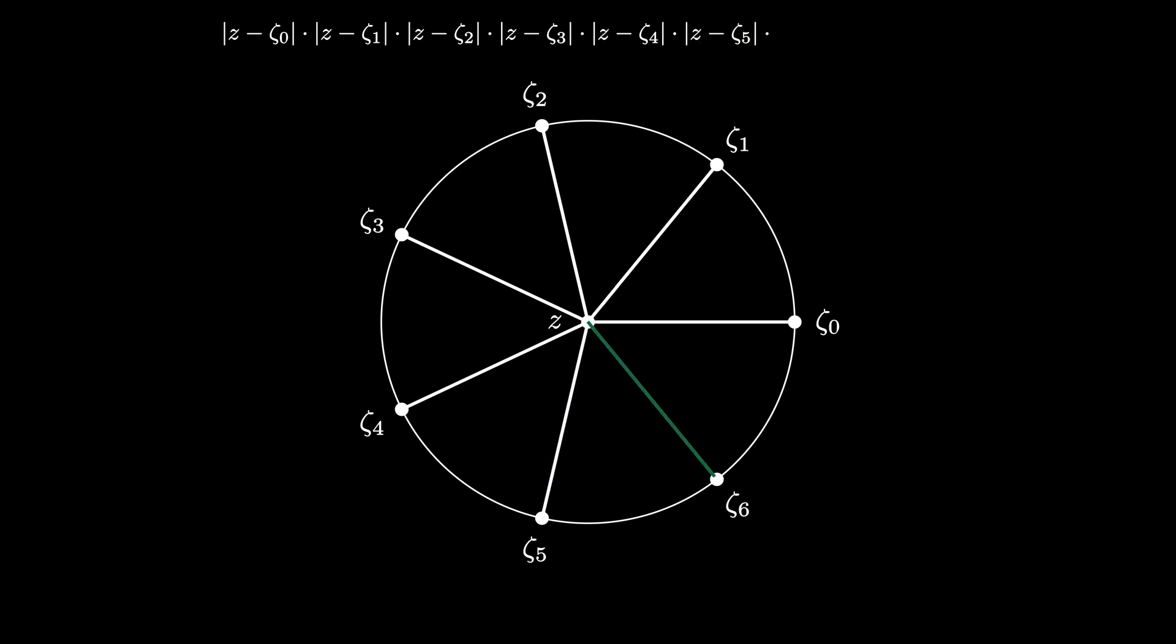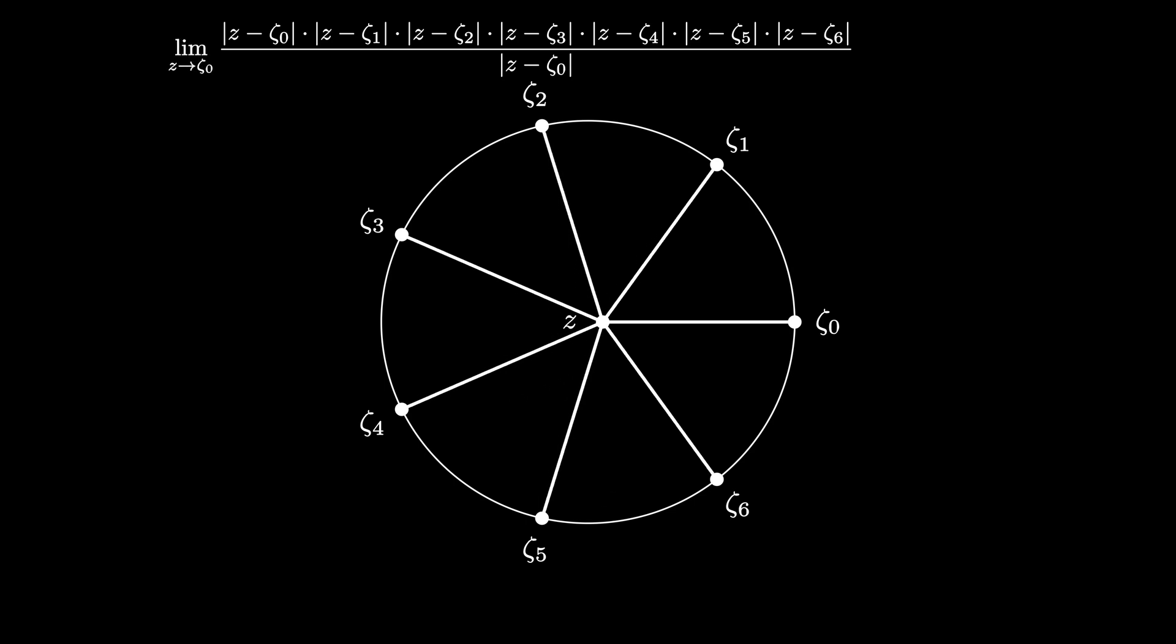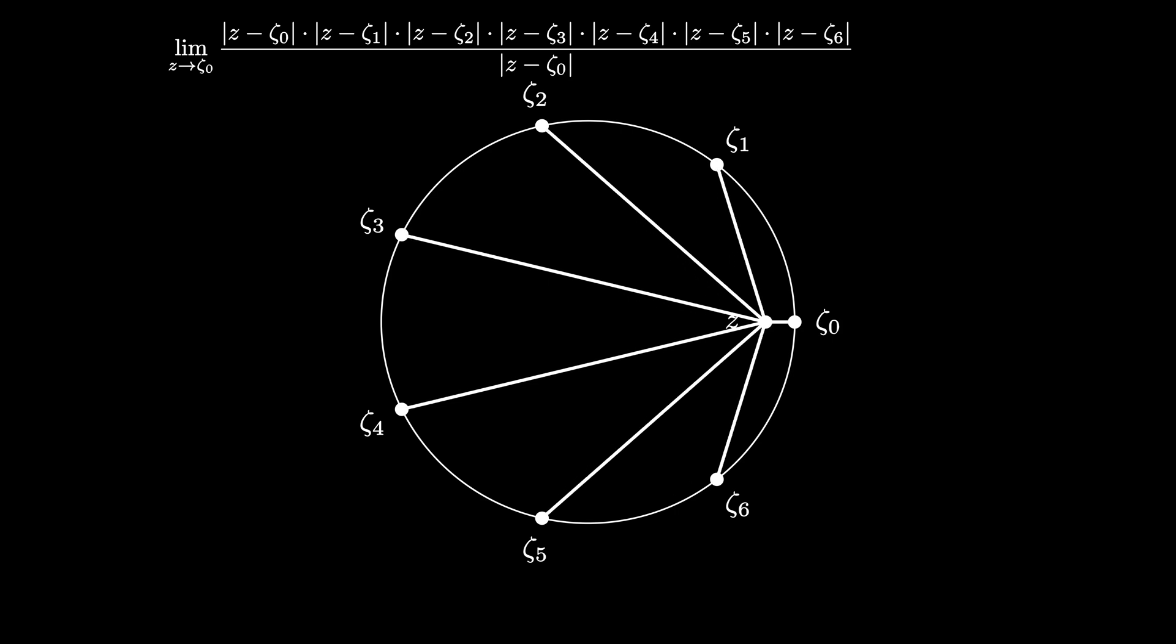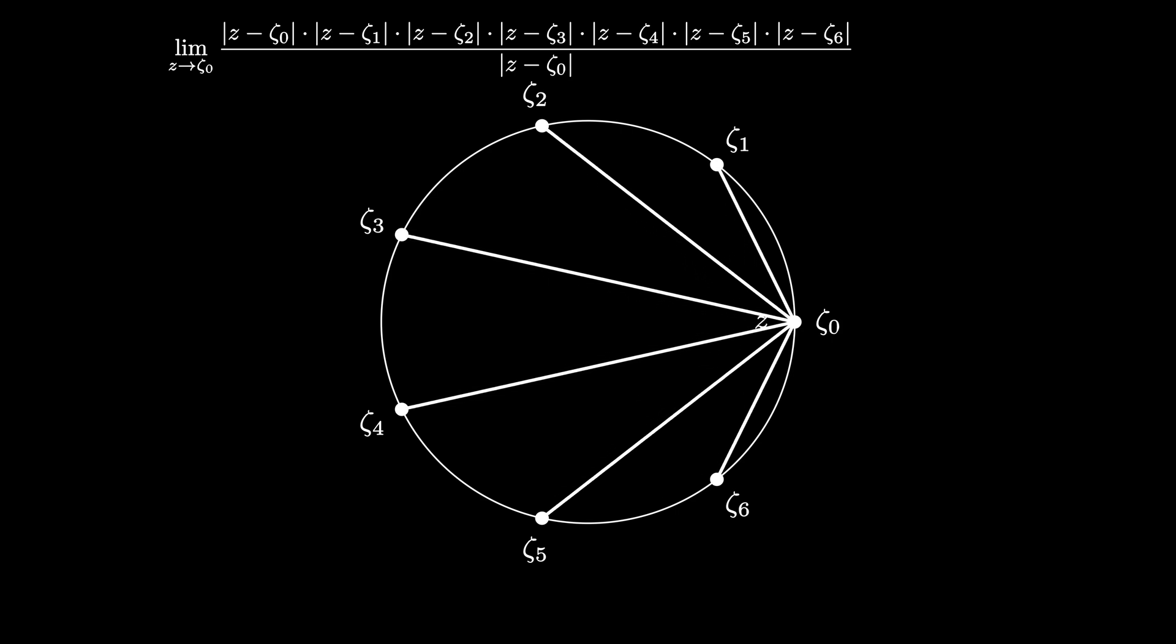As pictured, this product would be 1 because each of the pictured line segments is the radius of a unit circle, so has length 1. This product is almost the same as we want if z equals ζ₀. But because z - ζ₀ is in our product, we divide out by the length of z - ζ₀. Now we can take a limit as z goes to ζ₀, which means shrink z to ζ₀.